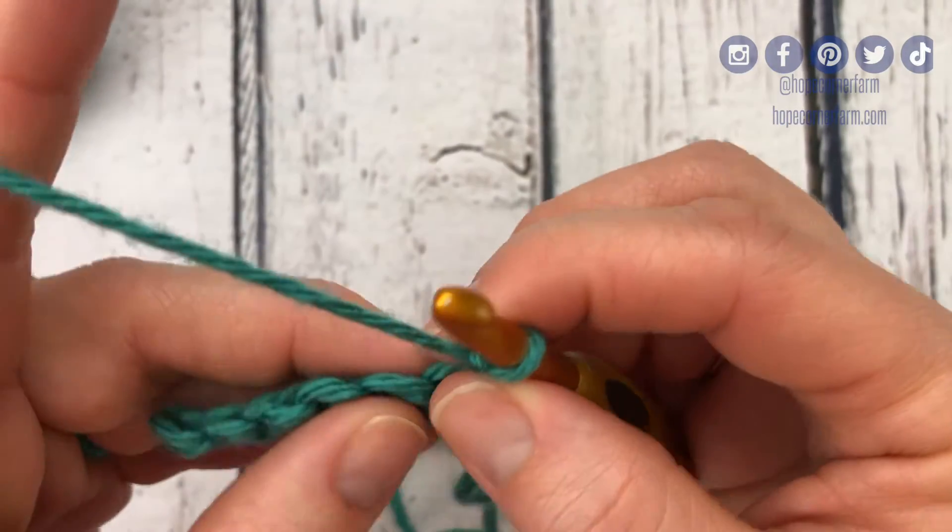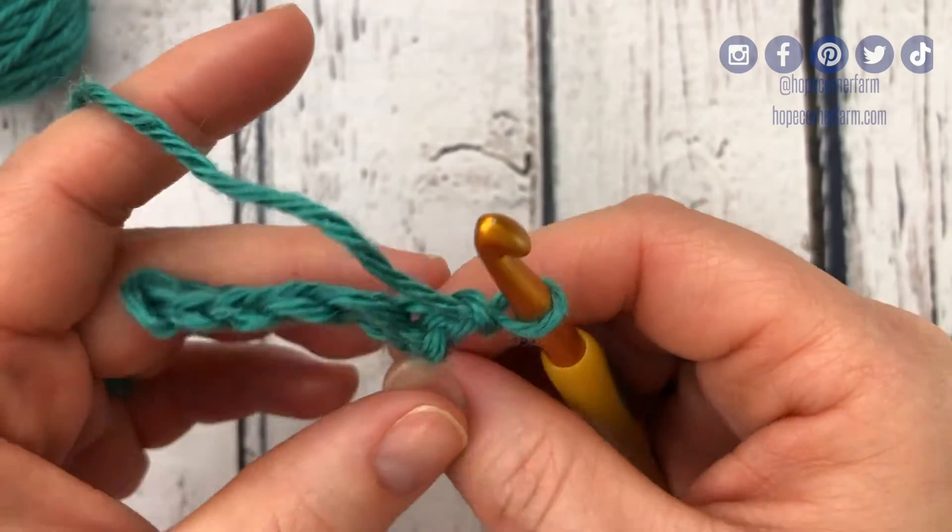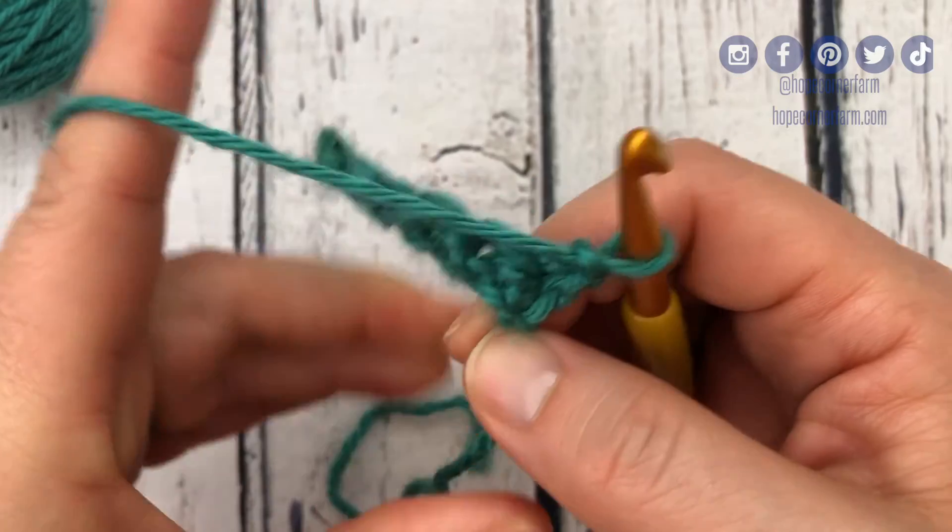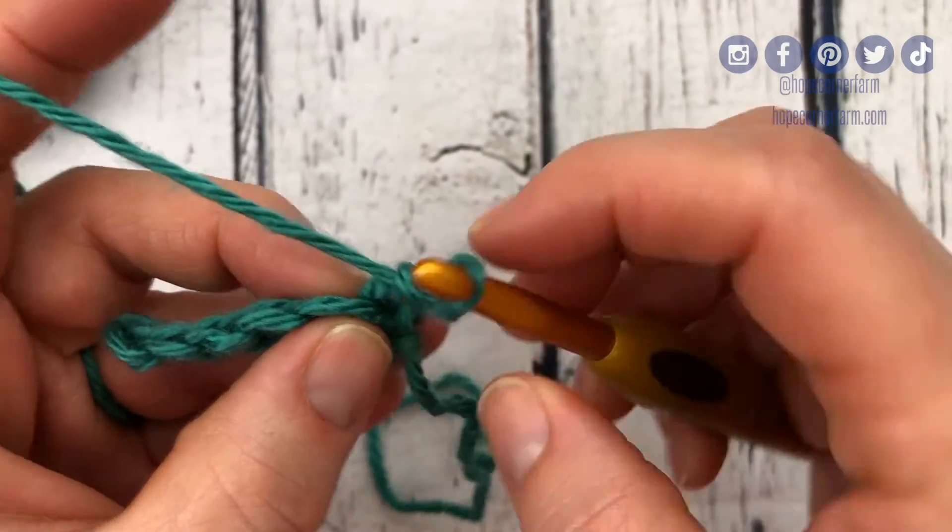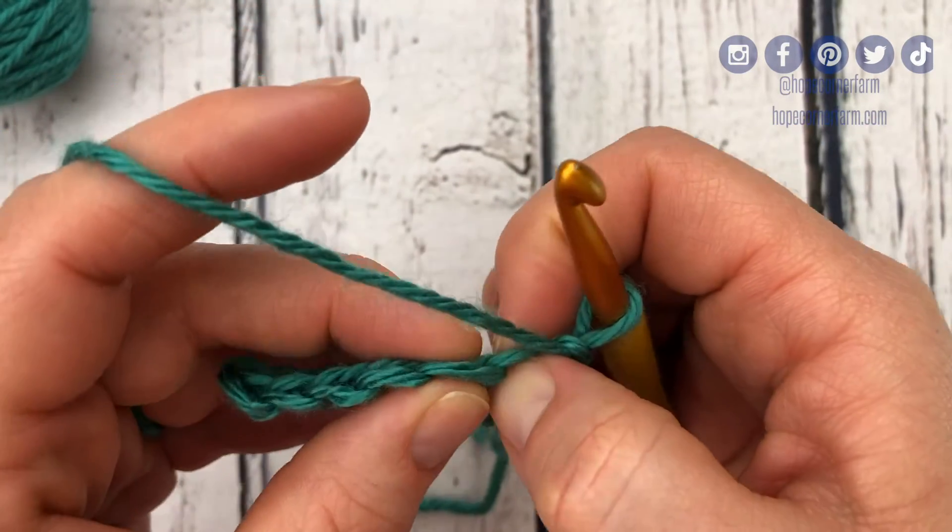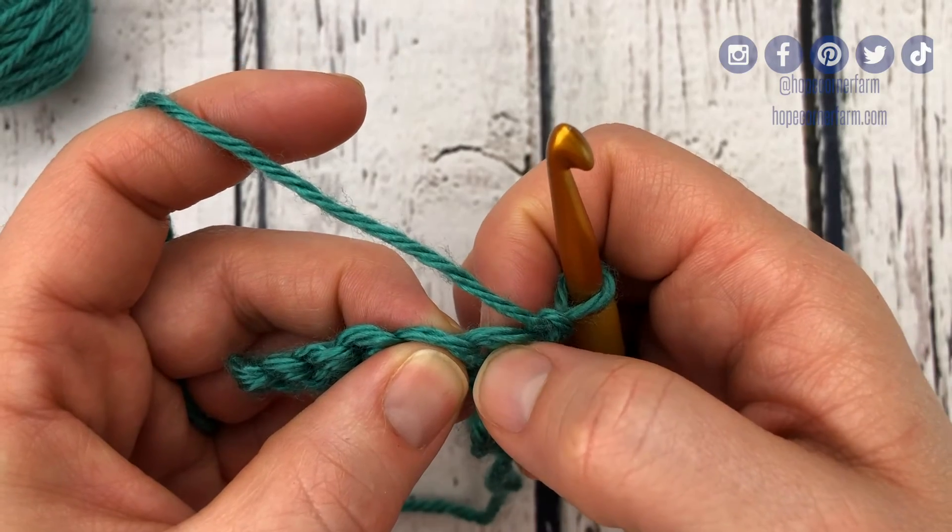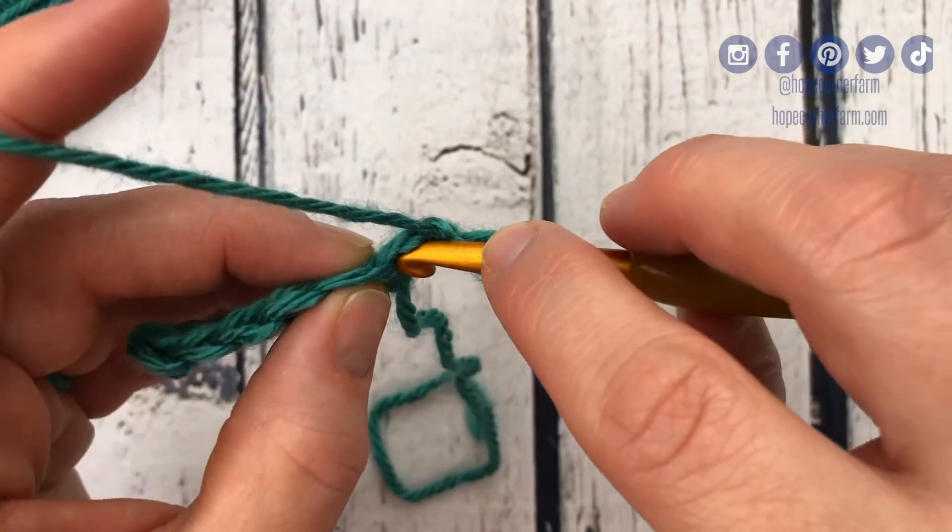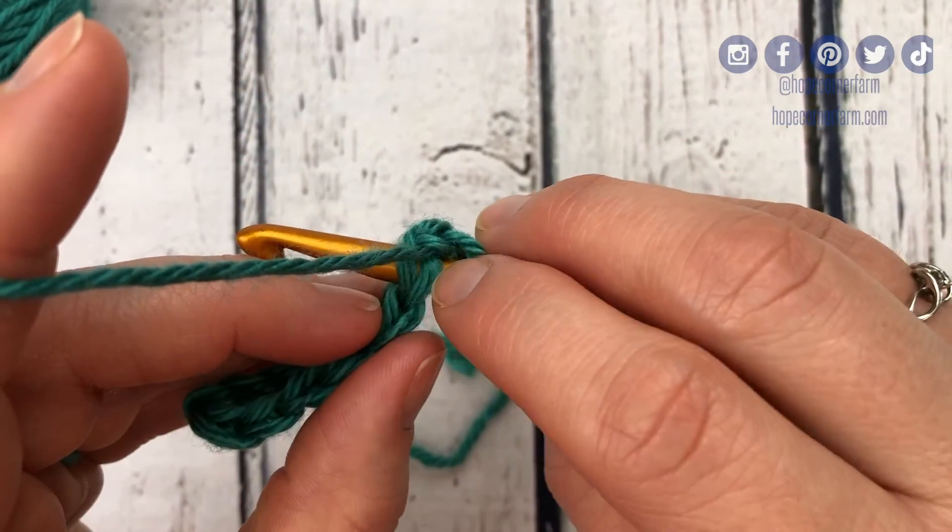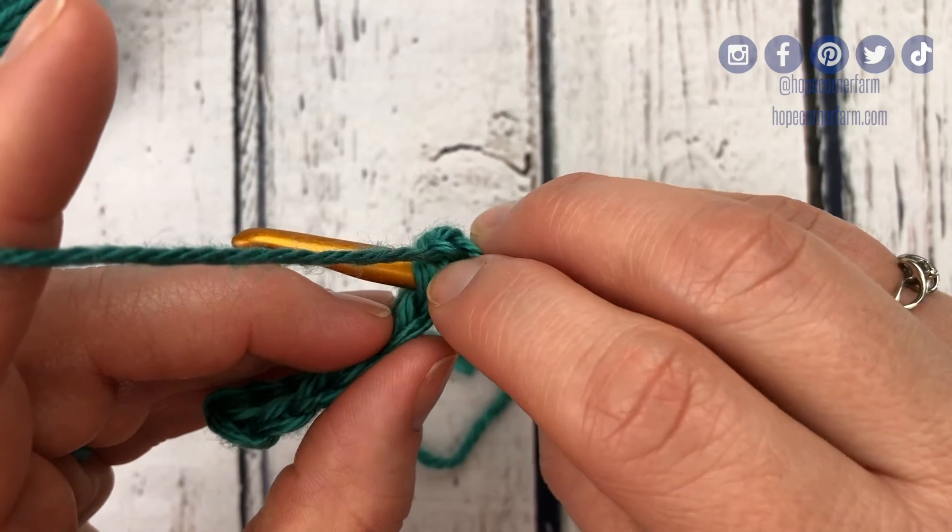Now we're ready for our second row of single crochets. I'm gonna tighten this little knot right here. We're gonna go into this upper hole. Hopefully you can see this. That right there is where we're going right here. We're gonna put our hook in there.